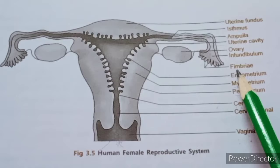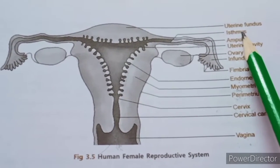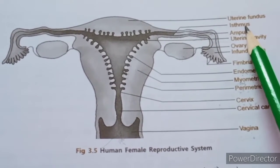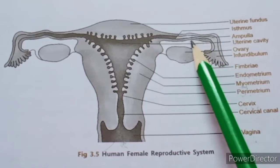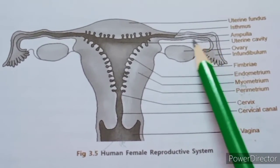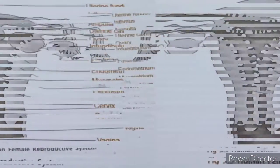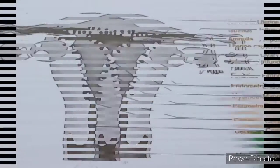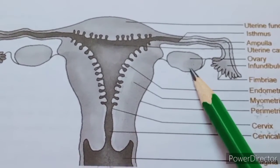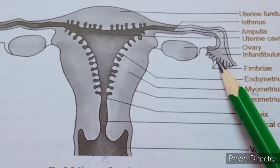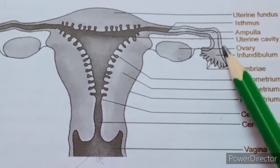The finger-like projections called fimbria, along with the infundibulum, ampulla, and isthmus, together constitute a pair of tubes called the fallopian tube or oviduct. The released egg from the ovary is collected by the fimbria and taken into the fallopian tube.